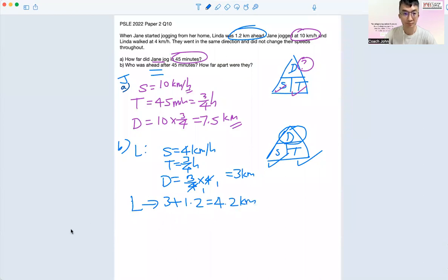Okay, and then comparing 4.2 and 7.5, oh, Jane is still ahead. Yeah, J is still ahead.